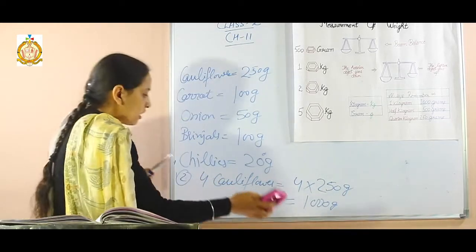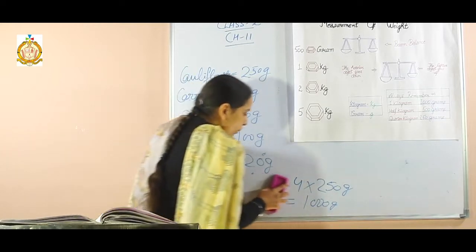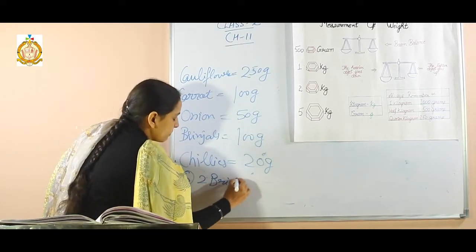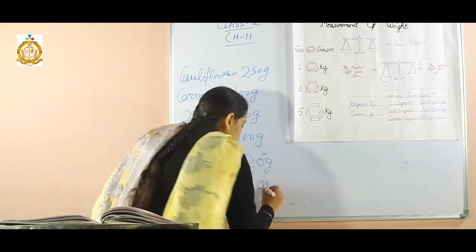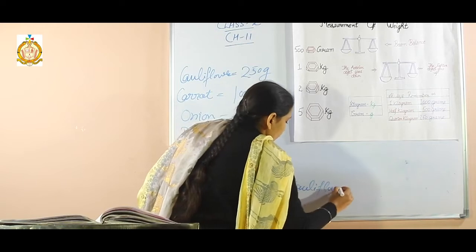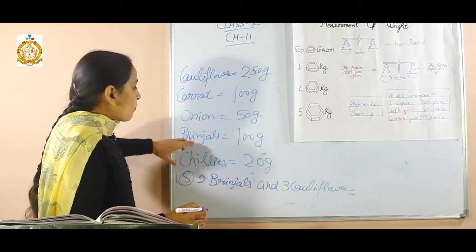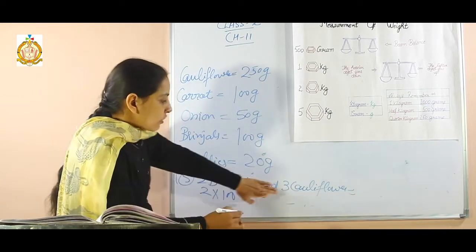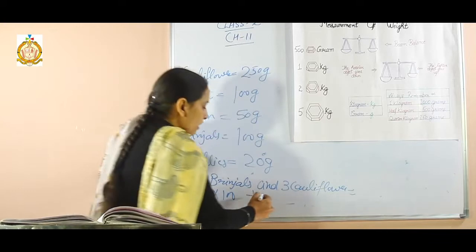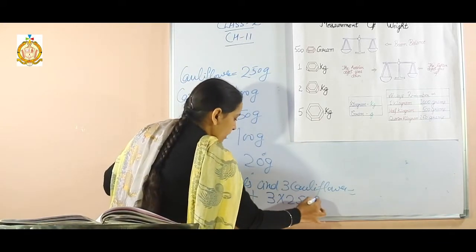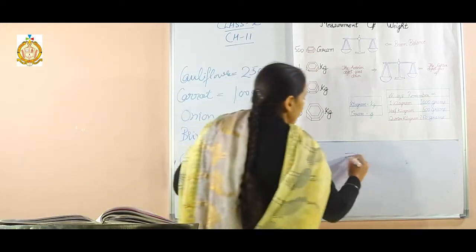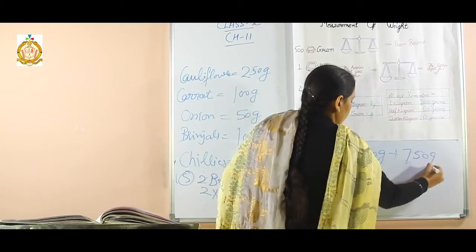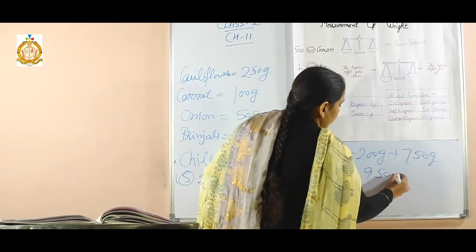Students, the next fifth sum is: you have to find out the weight of 2 brinjals and 3 cauliflowers. First of all, 2 brinjals — the weight of brinjals is 100 gram, so multiply 2 by 100. Then add 3 cauliflowers — the weight of cauliflower is 250 gram, so 3 multiplied by 250 gram. So 2 multiplied by 100 becomes 200, plus 3 multiplied by 250 becomes 750 grams. That means the answer is 950 grams.